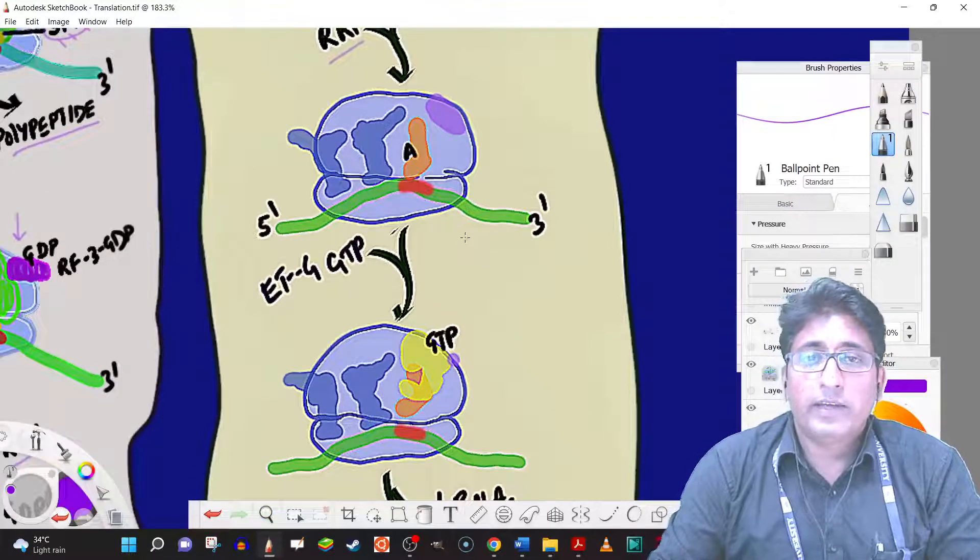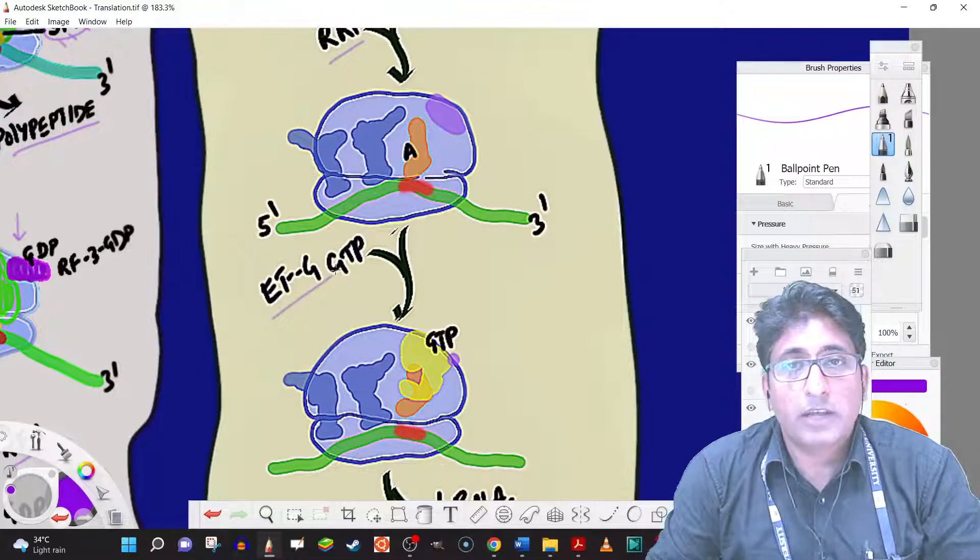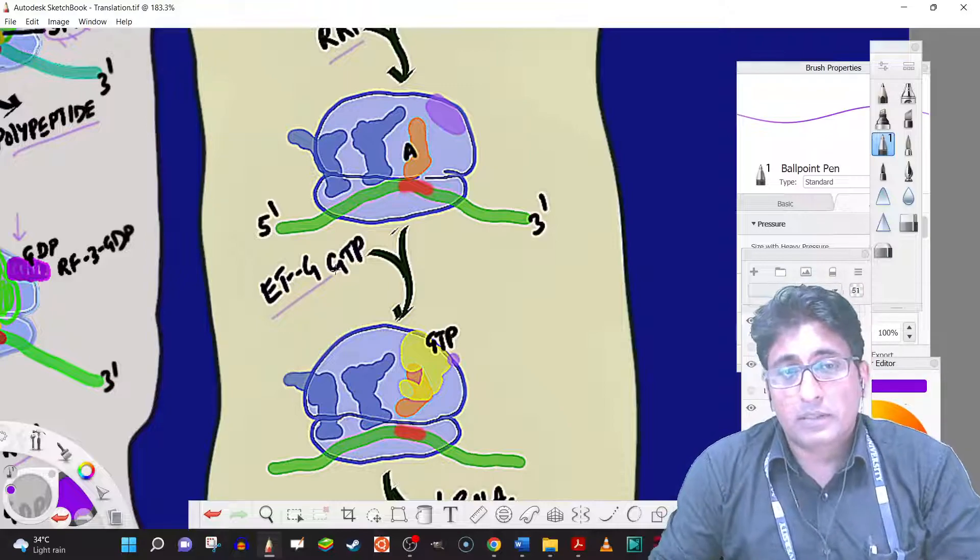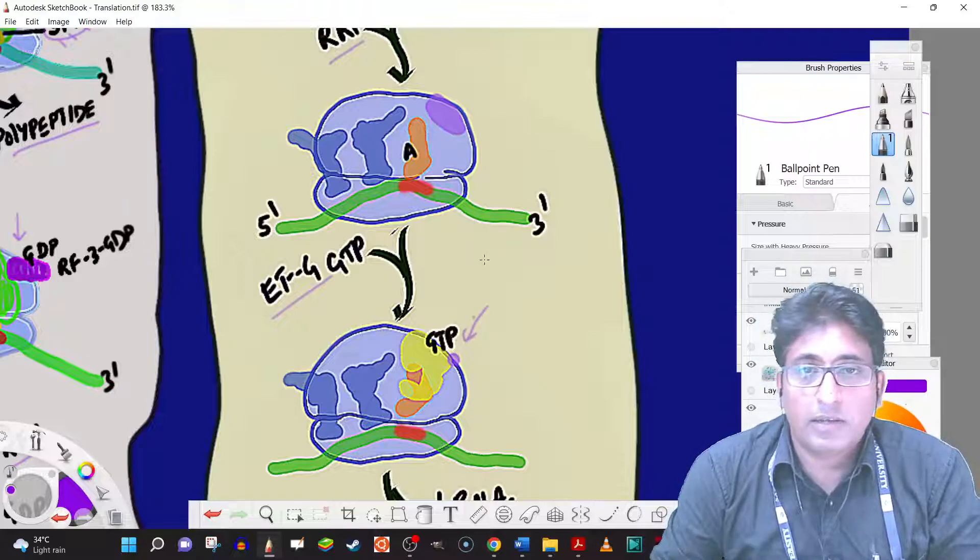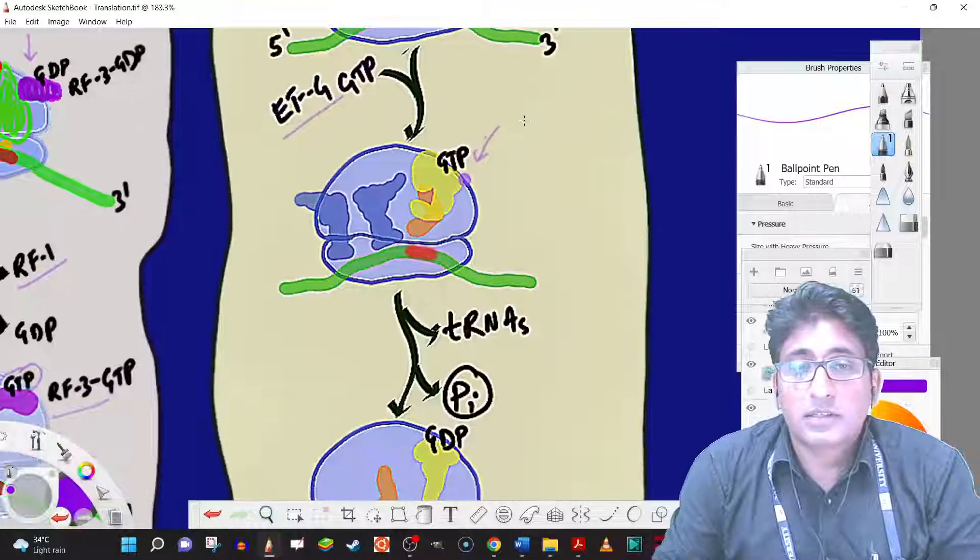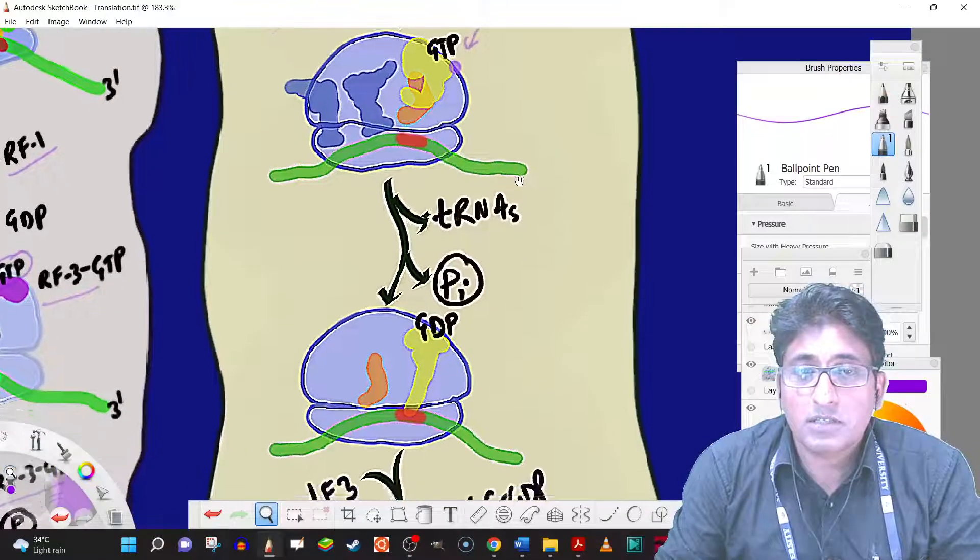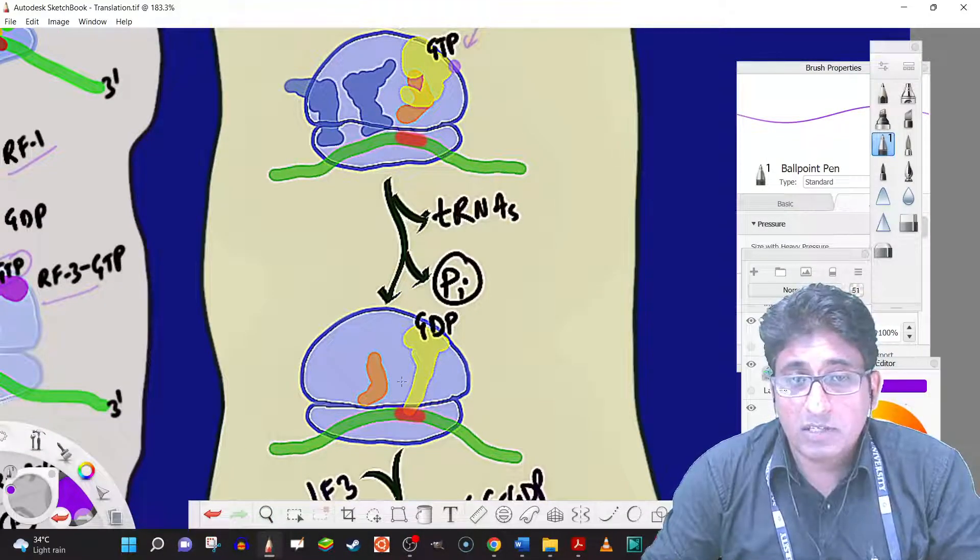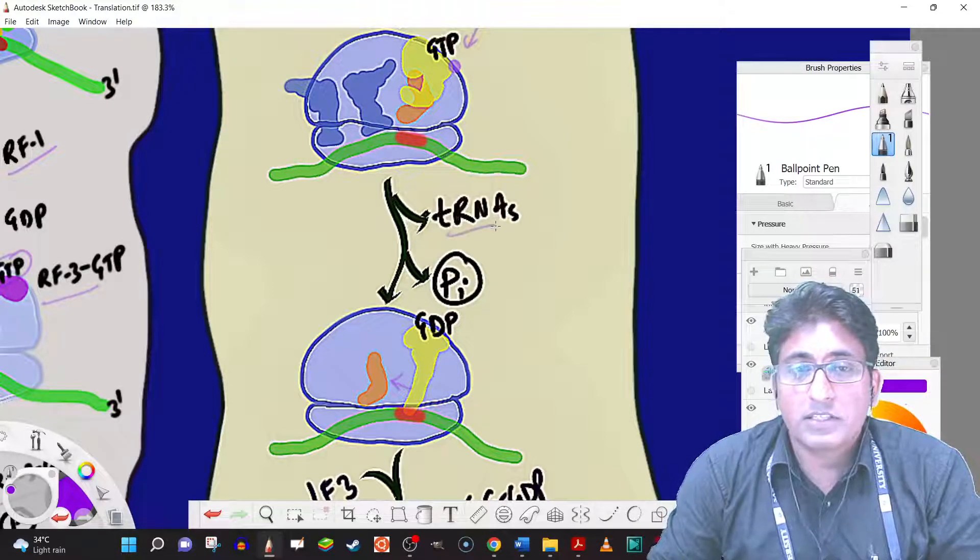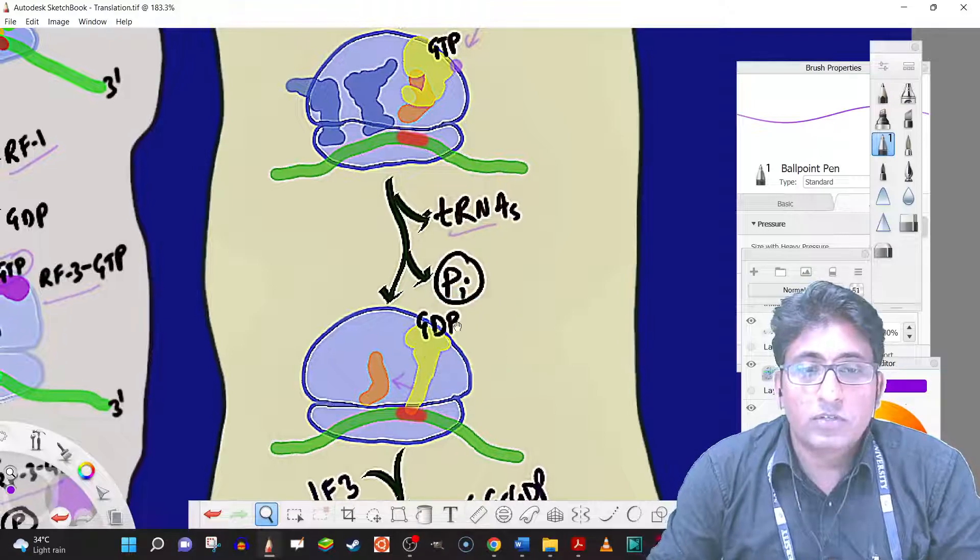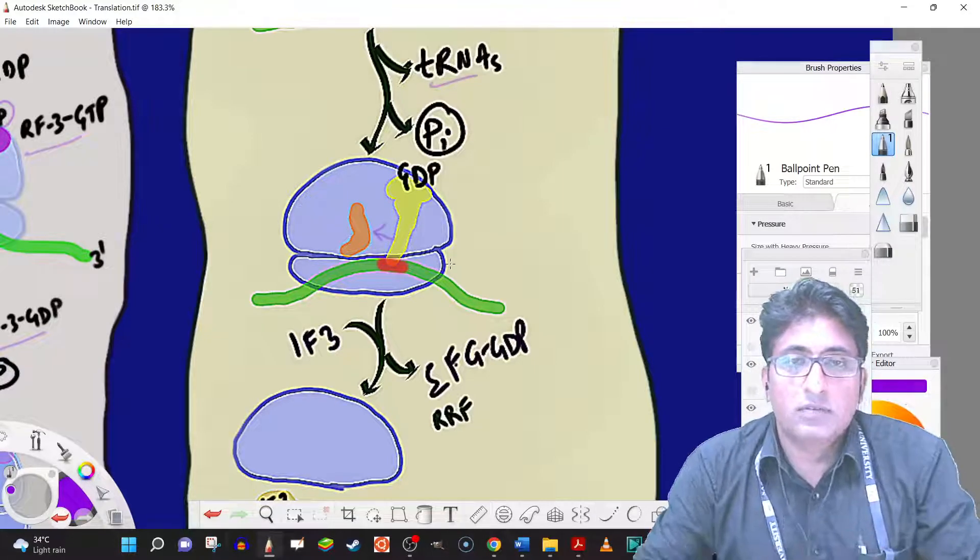Ribosome release factor binds to the A site. And then we have the GTP bound EF-G. The one that we have discussed in the elongation. It comes along with GTP and it treats the RRF as if it is just like a tRNA. And upon the hydrolysis of the GTP to GDP conformational change occurs. And that is pushing the RRF deep into the ribosome. Because of which the tRNAs are released. And also eventually it will result in the separation of the two subunits 30S and 50S subunits.